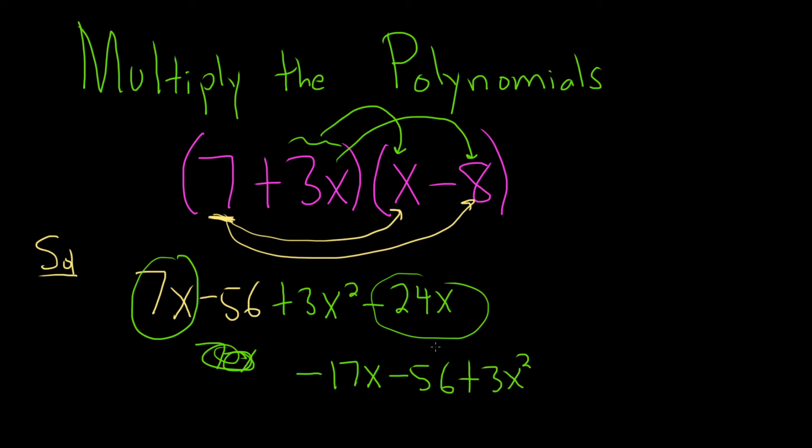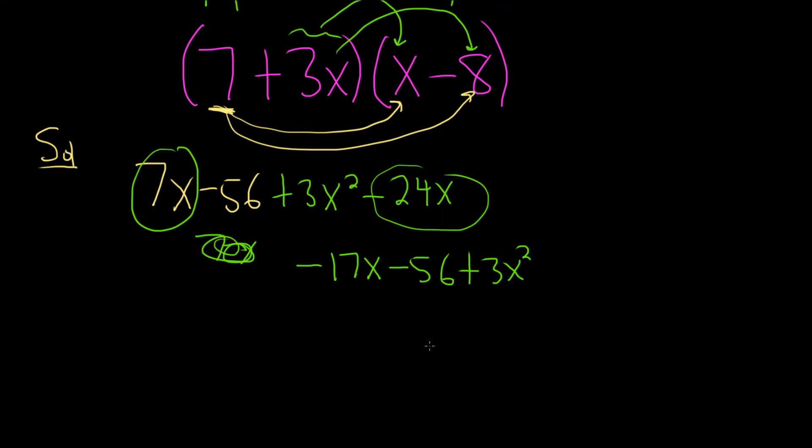And that's an OK answer. It's just people usually write the term with the biggest exponent first. Let's go ahead and do that. So this will be 3x squared minus 17x minus 56. And that'll be the final answer.